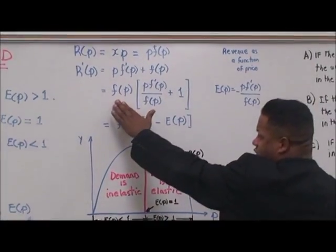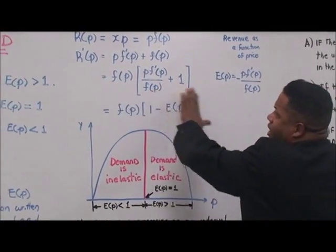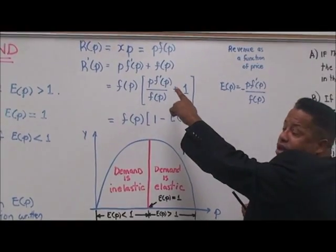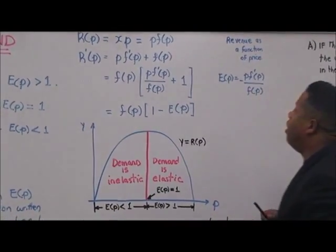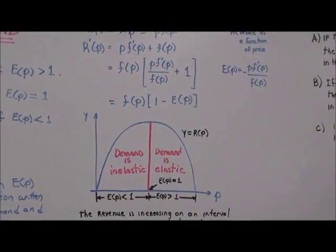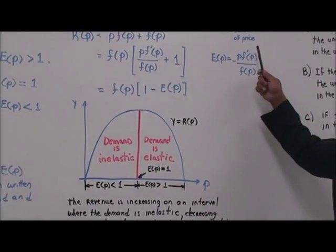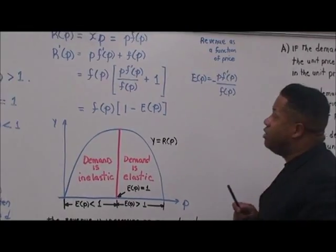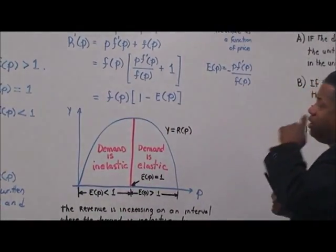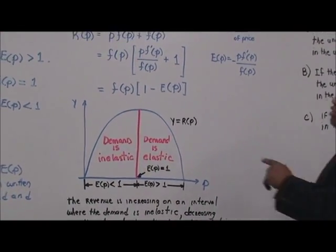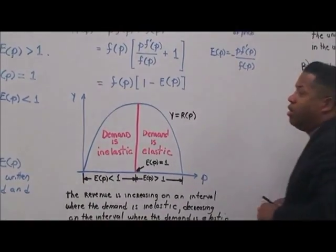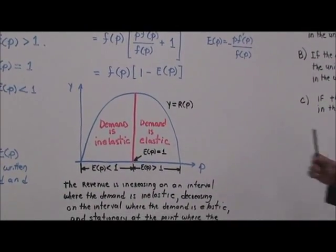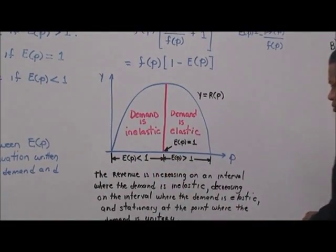This relationship involves E of P — remember that? The revenue as a function of price uses that relationship, which finally simplifies to F of P times one minus E of P.